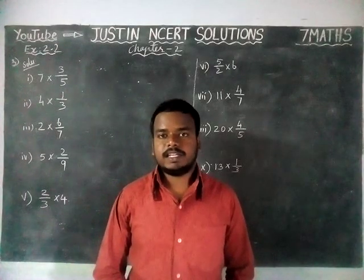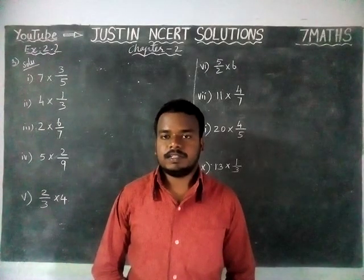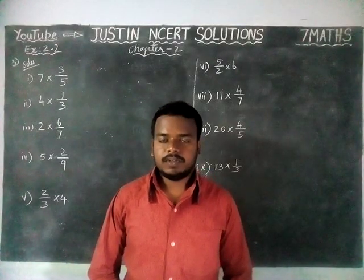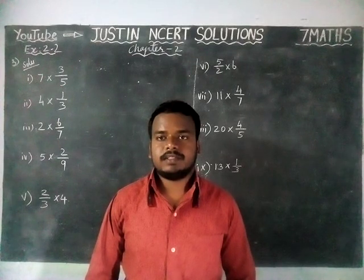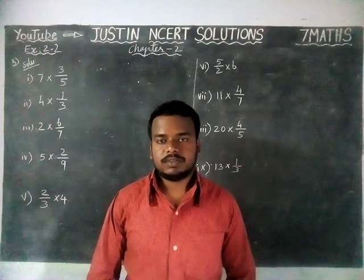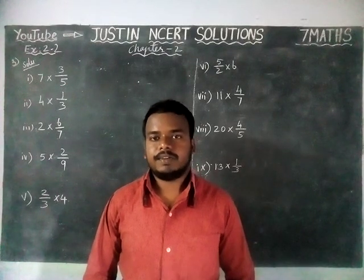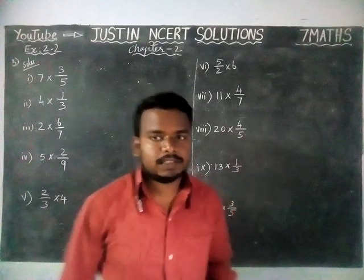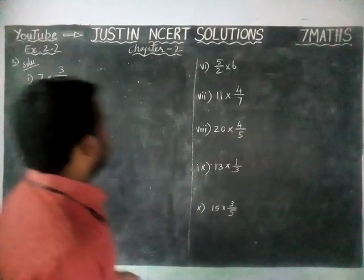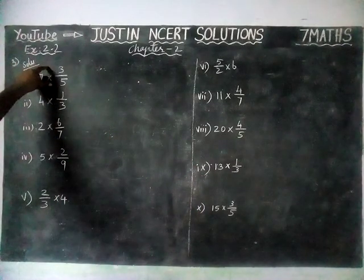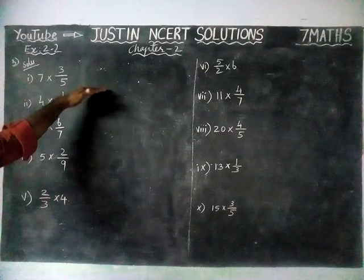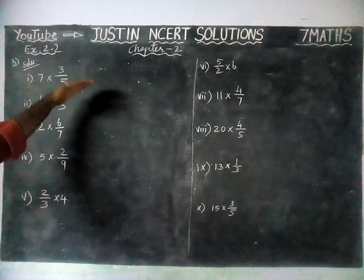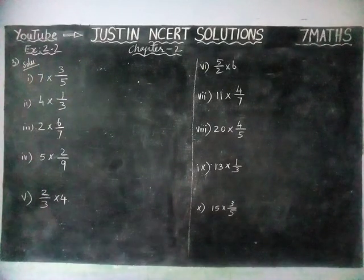Hi students, welcome to Justin's NCRD Solutions. In this video we are going to see 7th Standard Maths Chapter 2 Exercise 2.2, third question. They have given some products. We have to multiply and reduce to lowest form. If it is an improper fraction, we have to convert it into a mixed fraction.